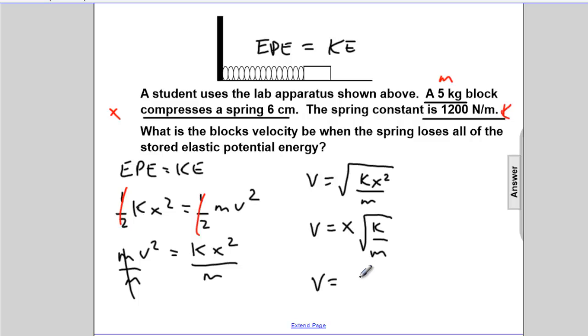When we sub the numbers in, x is the compression, that's 0.06 meters times the square root of k, 1,200 newtons per meter, divided by the mass, five kgs. So our numbers in. We're good to go.